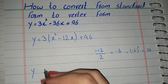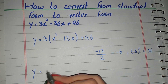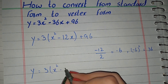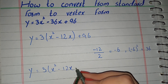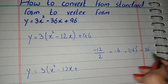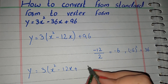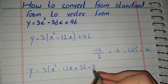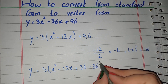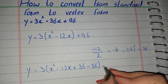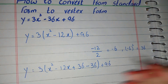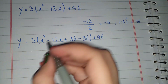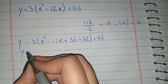The next step is to write: y equals 3, and inside the bracket write x squared minus 12x. Also write 36 one time as positive 36 and one time as negative 36. Then close the bracket and write the remaining term, positive 96.